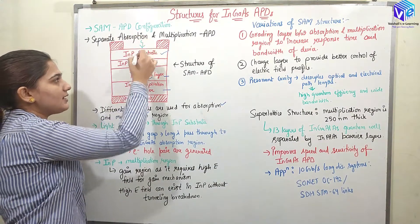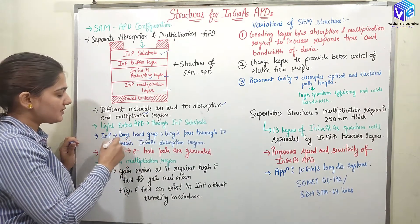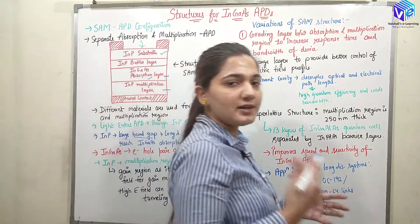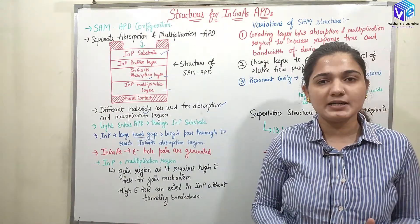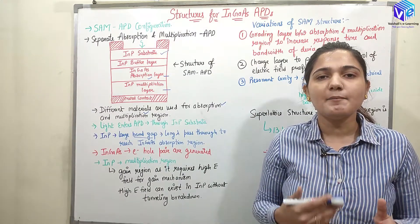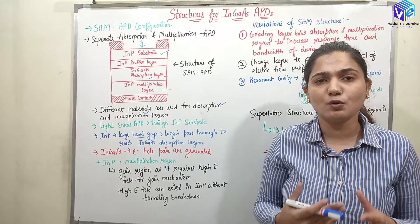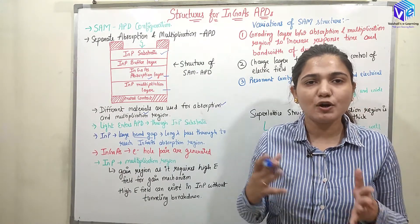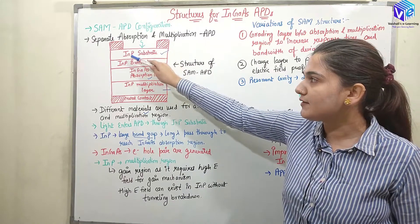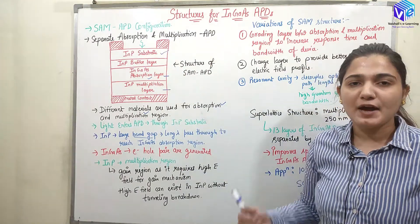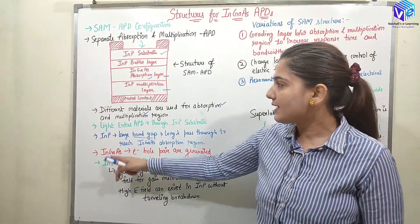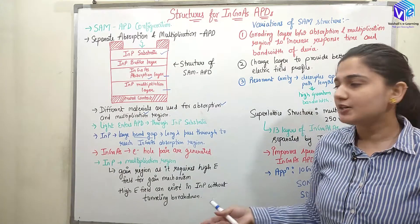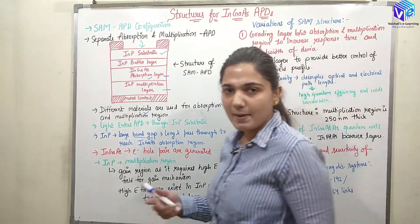Light is entering the indium phosphide substrate. The indium phosphide substrate has a very high band gap, so it would be very difficult to generate electron-hole pairs there by breaking the covalent bond — the covalent bonds are so tight that the band gap is very high. Therefore, in the indium phosphide substrate and the indium phosphide buffer layer, we are not generating electron-hole pairs. Whereas when the light moves into the indium gallium arsenide, electron-hole pair generation occurs because the band gap there is not that high.